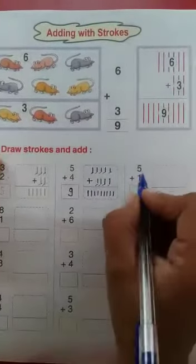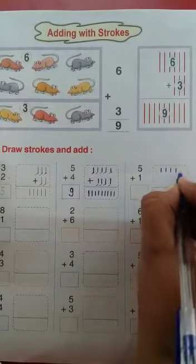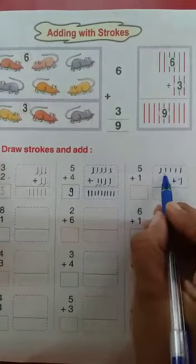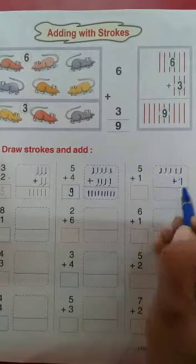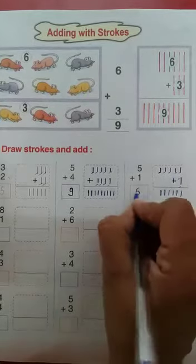Like this one some more. 5 plus 1. To 1, 2, 3, 4, 5. Kitni lines hai? 1. To hum count karengi? 1, 2, 3, 4, 5, 6. Kitni lines itni hai? 1, 2, 3, 4, 5, 6. Ok?